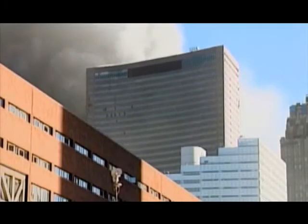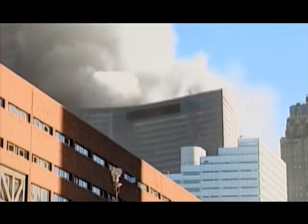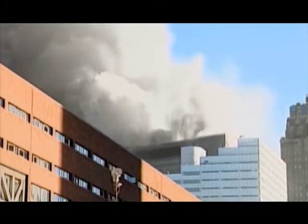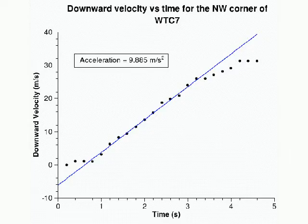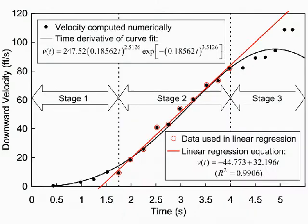Free fall would be a smoking gun for explosive demolition, because it would indicate zero resistance. Building 7 fell in actual free fall for over two seconds. NIST has grudgingly acknowledged this in their final report, but has refused to even address the obvious implications.